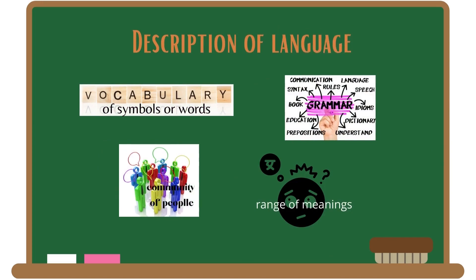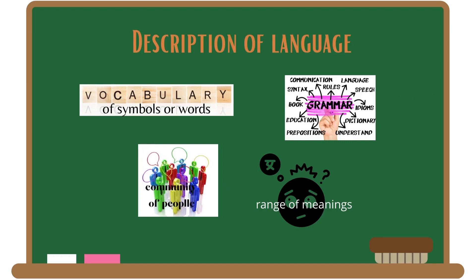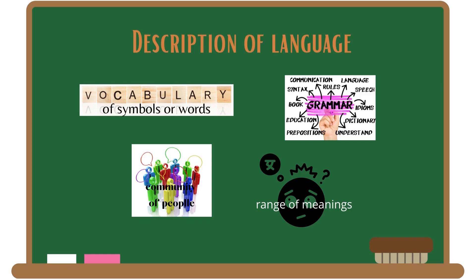These definitions describe language in terms of the following components. First, it is a vocabulary of symbols or words. Second, it is a grammar consisting of rules on the use of these symbols. Third, it is a community of people who use and understand these symbols. Fourth, it is a range of meanings that can be communicated with these symbols.